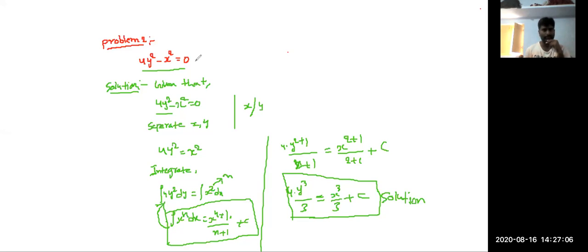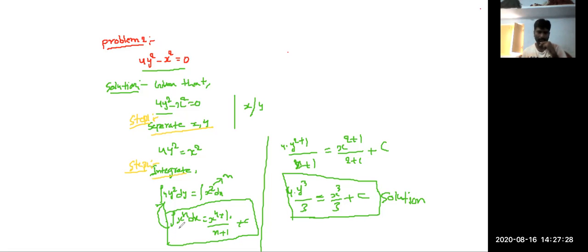In summary, two steps are involved. In step 1, we separated the variables x and y. In step 2, after separating the variables, we applied integration on both sides and used the standard formula to find the general solution: 4y cubed by 3 equals x cubed by 3 plus c.